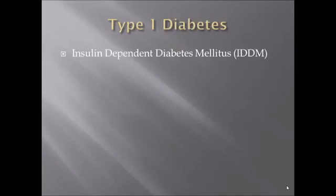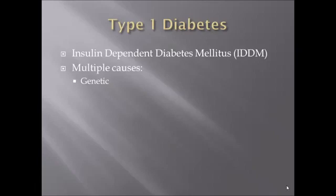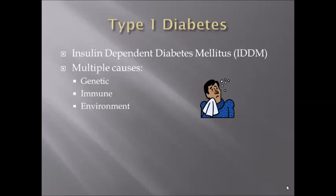Type 1 is also referred to as insulin dependent diabetes mellitus, because people with type 1 always need to take insulin. We don't actually know why people develop type 1 diabetes, but research suggests it is due to multiple factors such as genetics, the immune system, and environmental factors. Children may receive genes from their parents that predispose them to getting diabetes. The immune system can be tricked into thinking insulin-producing cells are foreign, which kills off those cells leading to an insulin deficiency. Certain viruses are also thought to help develop type 1.